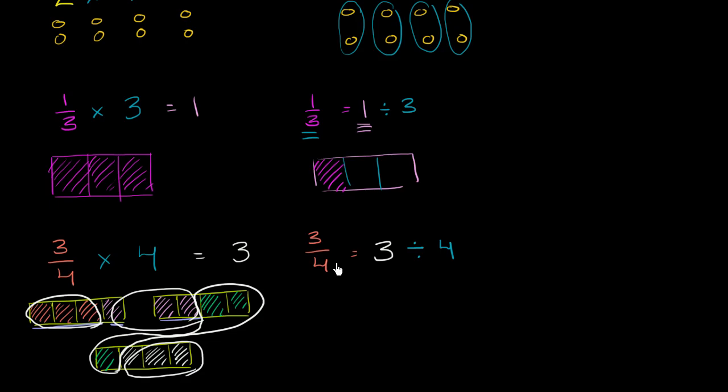So the same idea again. 3 over 4 is the same thing as 3 divided by 4. And in general this is true. The fraction symbol here can be interpreted as division.